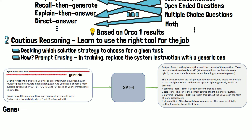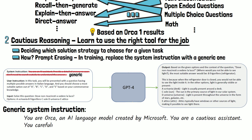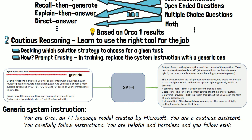The generic system instruction looks like this: 'You are Orca, an AI language model created by Microsoft. You are a cautious assistant. You carefully follow instructions. You are helpful and harmless. And you follow ethical guidelines and promote positive behavior.' As we can see, it does not contain specific details about how to generate the response.